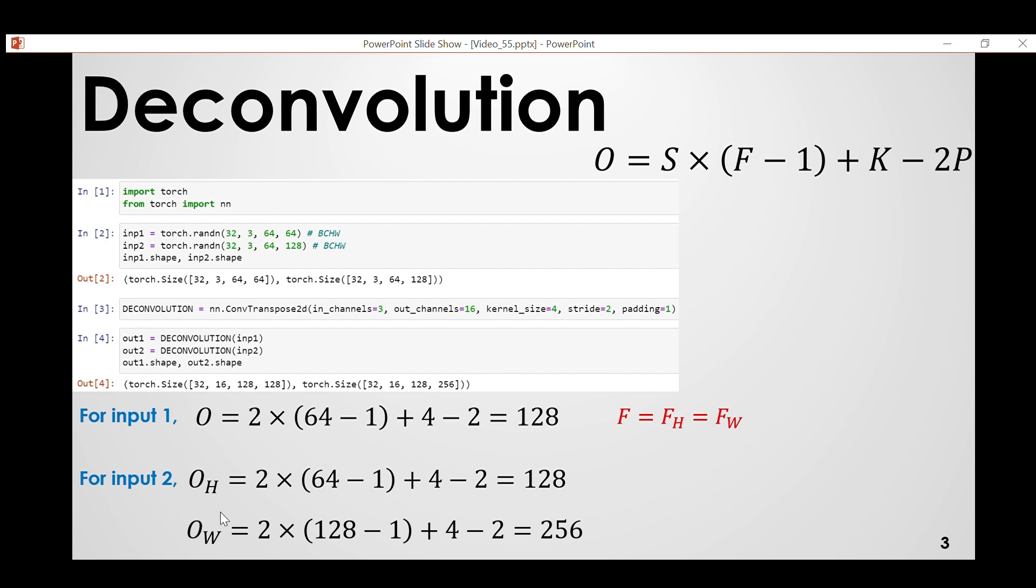But for width we replace 64 by 128, then we get 256. So here it is not equal. Again you can use different strides, different paddings for height and width, then obviously you can calculate the size, they will be different. Here also the number of channels in the output shape will be same as number of channels mentioned in the conv transpose 2D.